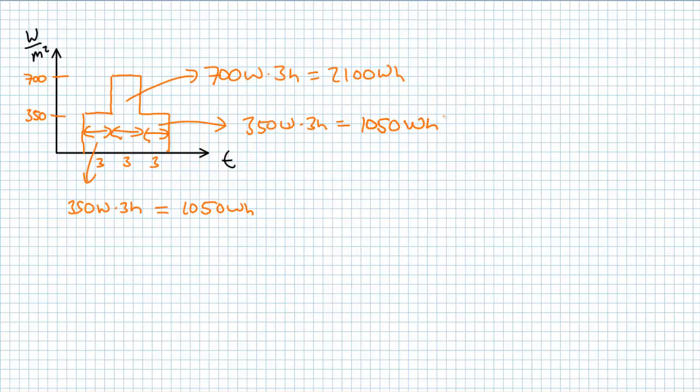Therefore, our total sum of energy input per meter squared surface area is the summation of 1,050, 2,100, 1,050, or 4,200 watt hours, or 4.2 kilowatt hours per meter squared.